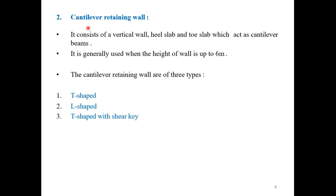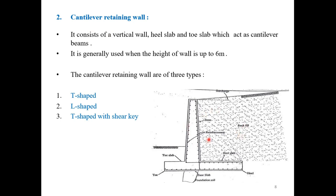The second type is the Cantilever Retaining Wall. You can see in the picture. The Cantilever Retaining Wall is made of RCC (reinforced cement concrete) and consists of a Vertical Wall, Heel Slab, and Toe. The Stem, Toe Slab, and Heel Slab act as a cantilever beam. It is generally used for heights up to 6 meters. The Cantilever Retaining Wall has 3 types: T-shaped, L-shaped, and T-shaped with counterforts.